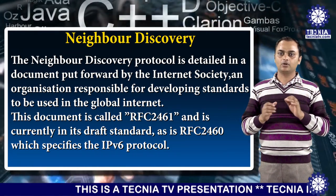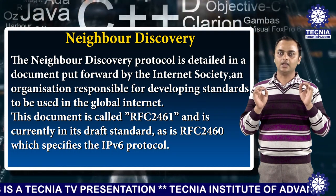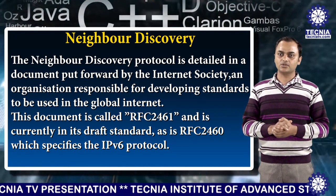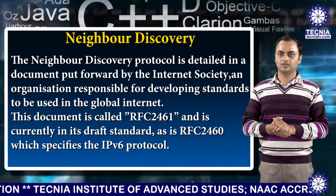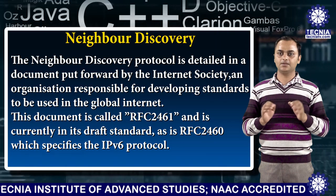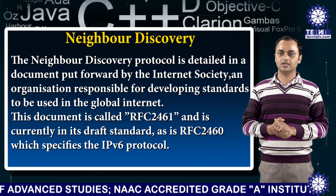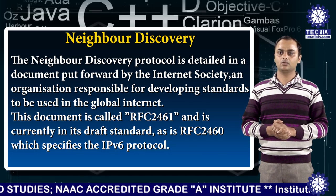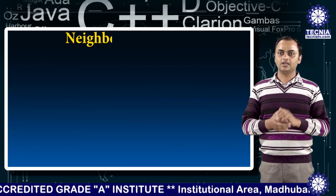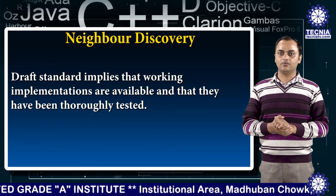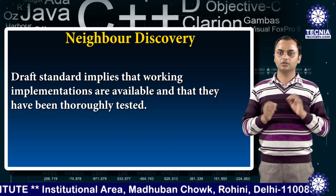The NIWA Discovery protocol is detailed in a document put forward by the internet society, an organization responsible for developing standards to be used in the global internet. This document is called RFC 2461 and is currently in its draft standard as RFC 2460, which specifies the IPv6 protocol. The draft standard implies that working implementations are available and that they have been thoroughly tested.